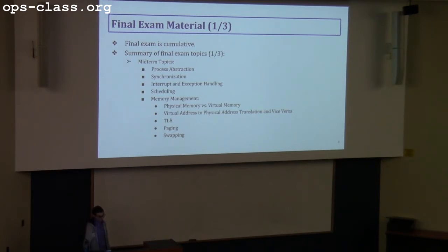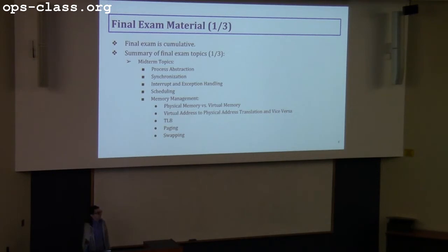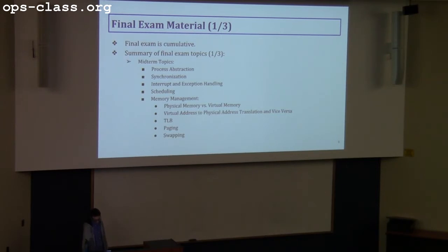We then covered memory management — virtual and physical addresses. You should know the process of translating virtual to physical addresses, how we divide the virtual address, how we retrieve the physical address for a given virtual address, what a page table is, what a core map is, and what each keeps track of. You should also know the different page table implementations: flat array, linked list, and multilevel arrays — how they're implemented and their advantages and disadvantages.